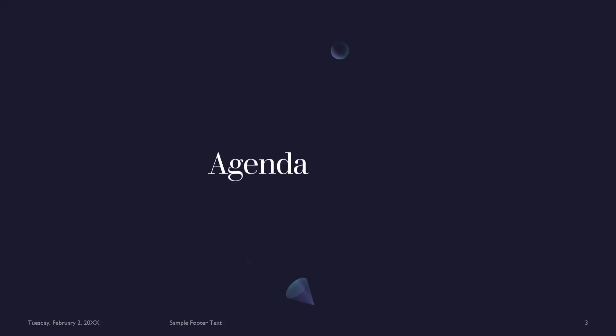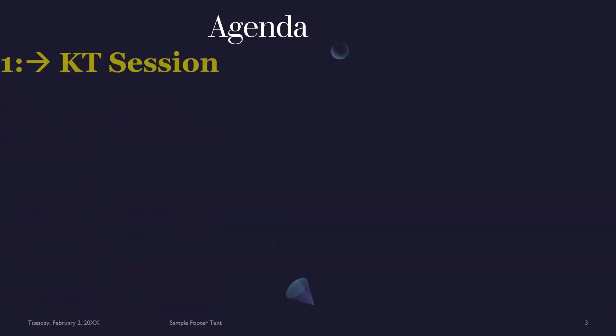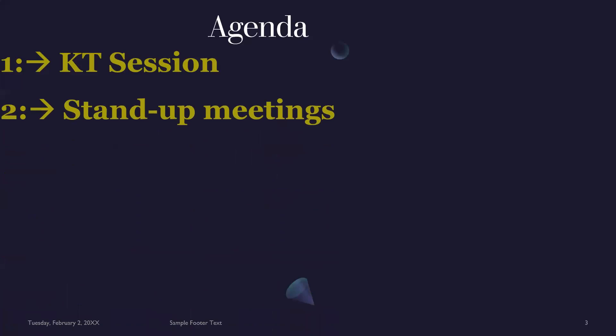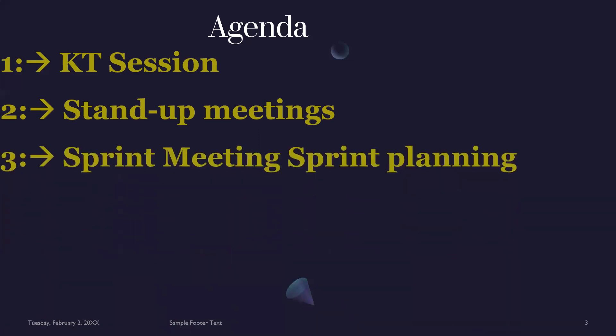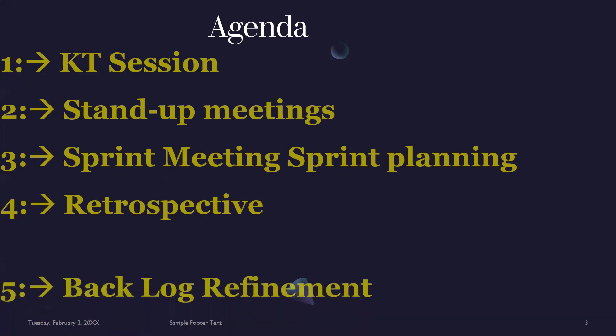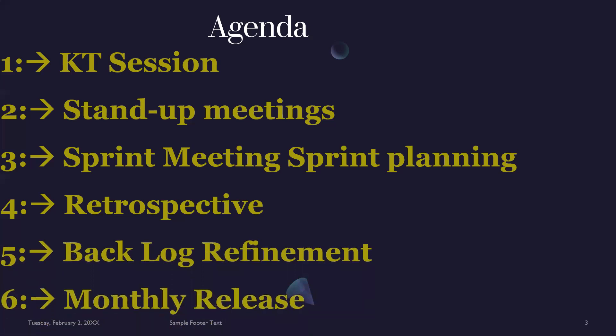Let's get started. Today's agenda has six topics. First is the KT session — what is a KT session when you join a project? Second is the stand-up meeting — what is it and why do we need it? Third is the sprint meeting. Fourth is sprint planning. Fifth is the retrospective — what exactly is a retrospective? And sixth is backlog refinement. We also cover the monthly release. We'll learn each one by one.